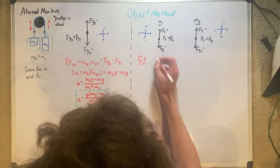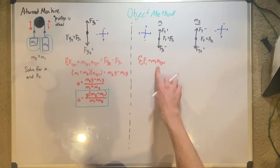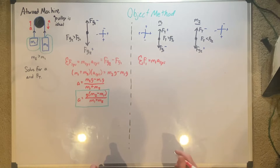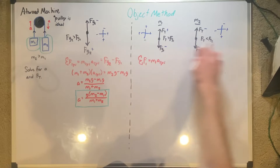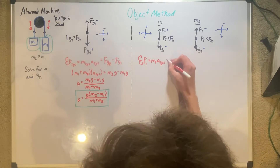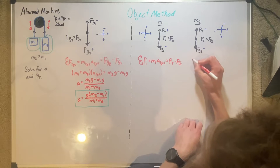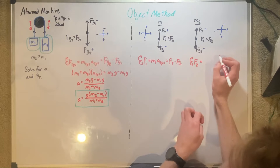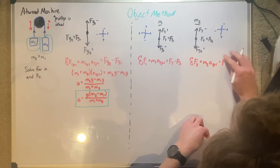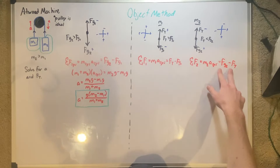Sum of forces on M1 is equal to M1 times acceleration of the system, which is also equal to force of tension minus force of gravity 1. We know that the acceleration of the system is the same on both of them because we set our directions of positive and negative as the directions of acceleration. Sum of forces on M2 is equal to M2 times acceleration of the system, which equals force of gravity 2 minus force of tension, because now the signs are swapped.